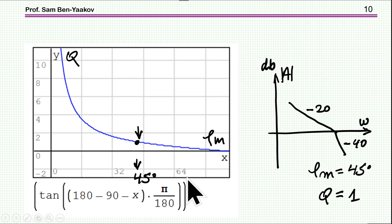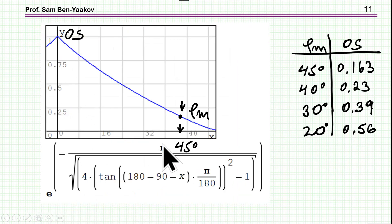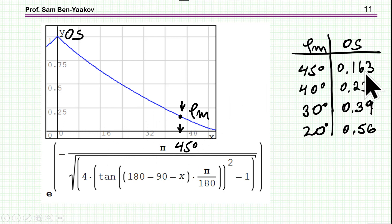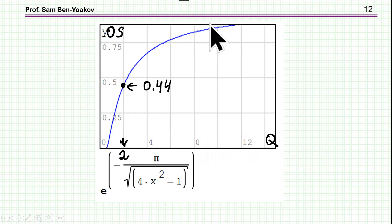I've prepared some plots for this situation — minus 20 dB then minus 40 dB slopes. I'm showing the relationship between the phase margin and Q according to this equation. Very nice. I've also plotted the overshoot as a function of the phase margin: at 45 degrees, the overshoot is about 16%. As the phase margin goes lower, the overshoot becomes larger. I've also plotted the standard relationship between overshoot and Q — a small Q gives a small overshoot, and a higher Q gives a much higher overshoot.